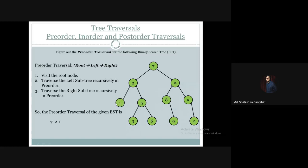We visit node 1 and print its value. Then for the right subtree we traverse with root 5 — we visit 5 and print it. Then 5's left subtree has node 3, so we visit 3 and print it. And 5's right subtree has node 6, so we visit 6 and print the value.